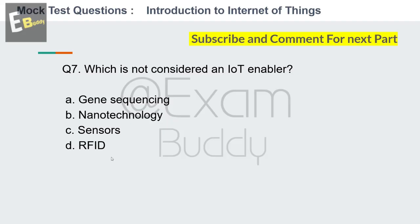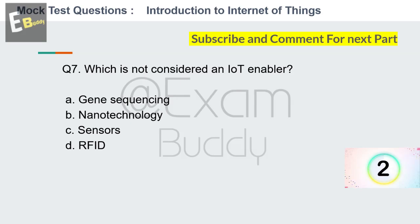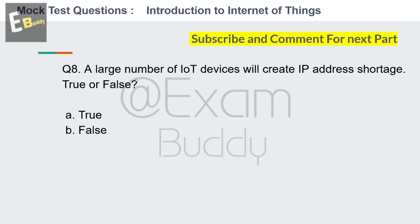Question number seven: which is not considered an IoT enabler? Options: gene sequencing, nanotechnology, sensors, RFID. The answer is A — gene sequencing.